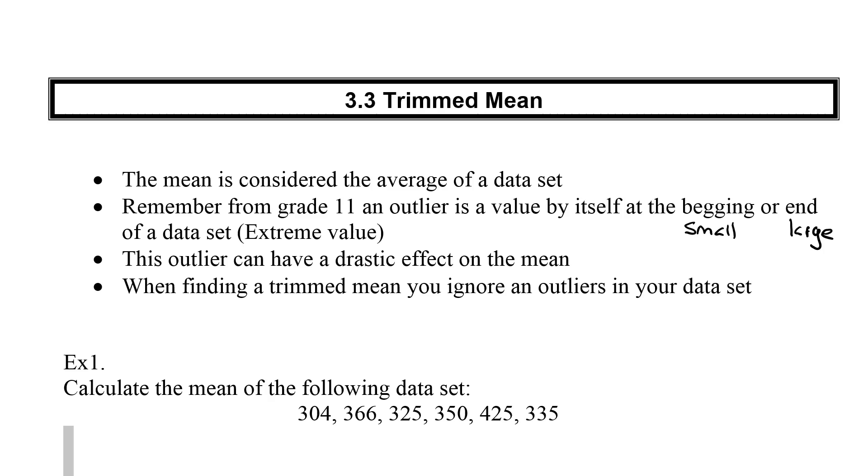Outliers can have a very drastic effect on our mean. If we're going to look at a trimmed mean, we're going to ignore the outliers. This will give us a better or more accurate number for our mean. You may ask yourself, why would we ever do this?